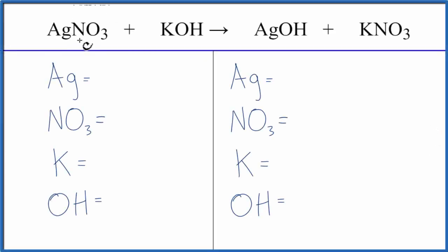In this video, we'll balance the equation AgNO3 plus KOH, that's silver nitrate plus potassium hydroxide. Let's count the atoms up.